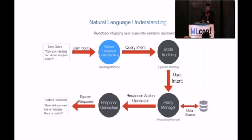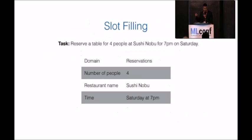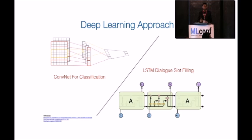The goal of the natural language understanding component is to map the user's query into a semantic representation. Typically this has been viewed as a slot-filling problem, where you have a frame representing the intent — in this case, making a reservation — and a set of slots representing the parameters needed to carry out the action: the number of people, the restaurant name, and the time and date. This has been viewed as two problems: identifying the frame or intent, which is a classification problem, and understanding the slots, which is sequence tagging. Two deep learning approaches that have worked very well are convolutional neural networks for the classification part and the LSTM-CRF method from 2015 for slot-filling.